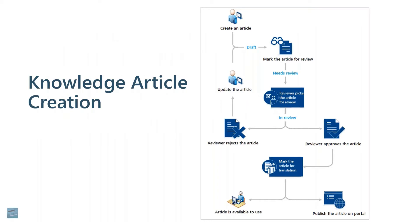This slide talks about the publishing process — the process that goes through from creating an article. You might have anybody create an article, but that article would then be in draft mode. Somebody would review it, maybe update it. They can reject the article, which then goes back to the initial user, who might get an email or have a view of rejected articles. They'll edit it, put it back into review mode, and then maybe a manager approves it. In the end, they publish that article, making it available for other users to see.